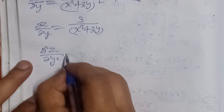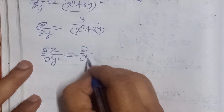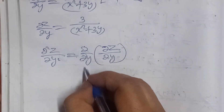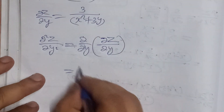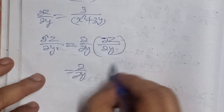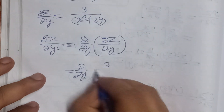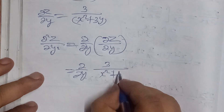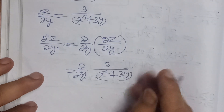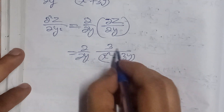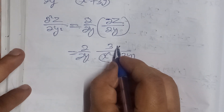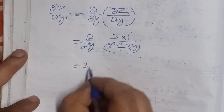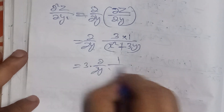We can find del²z/del y² by differentiating del z/del y = 3/(x² + 3y) with respect to y. Here 3 is a constant, so we take it out, leaving 1/(x² + 3y) to differentiate.